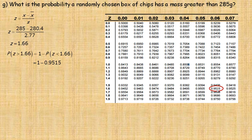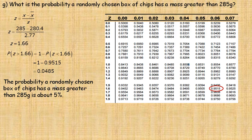So we get 0.0485. So the probability of randomly chosen box of chips has a mass greater than 285 grams is about 5%. That would round to a 5%.